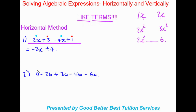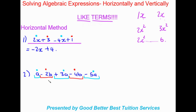Moving on to equation number 2. We have a with exponent 1, another a without an exponent — that's a like term — and negative 5a is also a like term. Then we have negative 2b and negative 4b as like terms. An important point: each term includes the sign in front of it, so you know what you are adding or subtracting and which signs to use.